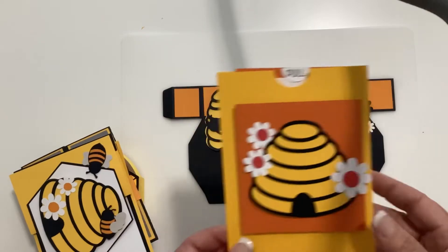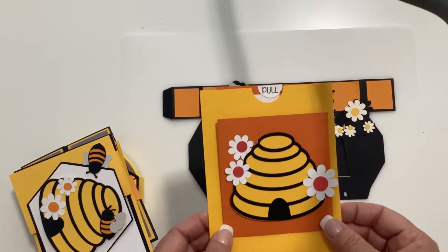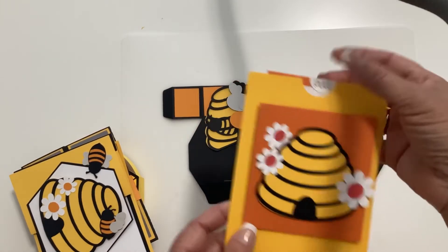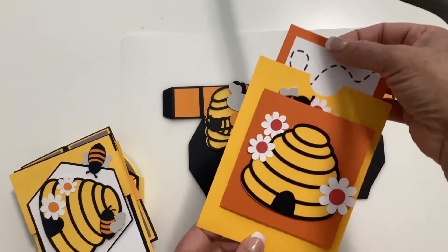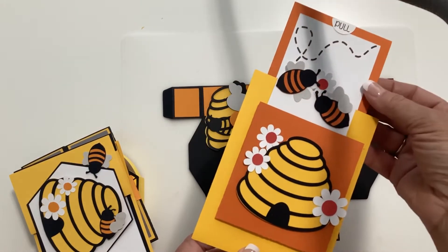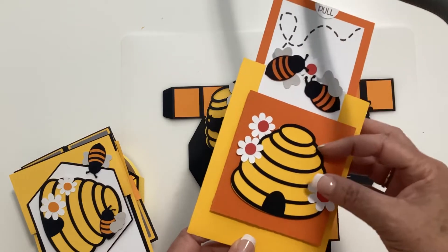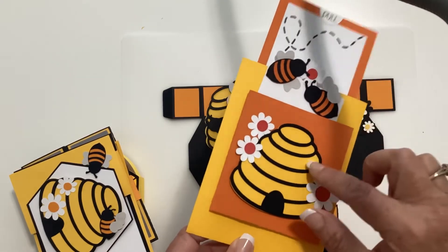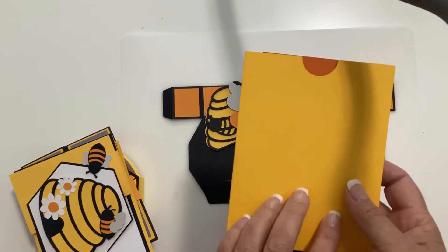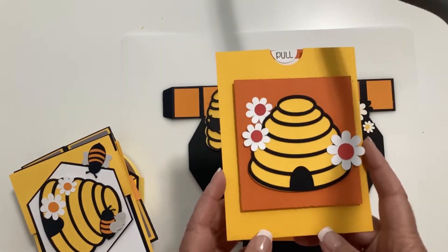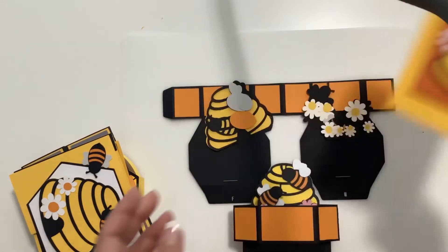Next up is the double pocket card. These have been really popular and this also is an A2 card. It fits in an A2 envelope and you just pull that up and then you have your little bees pop out of your beehive and a little place to write a message. You can also put a message on the back there.